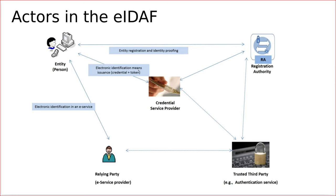When a person or entity gets these means, the management of the data within them is usually handled by a trusted third party. Then relying parties — such as public authorities, businesses, or other citizens — can use this electronic identification mechanism to authenticate and prove the identity of a person who wants to reach the relying party or government to access public services.